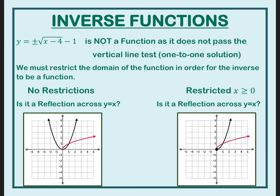It's not a function — it does not pass the vertical line test. So how do we make the inverse a function? If I just did the square root of x, this is a function and it does pass the vertical line test. But this is not a complete reflection over y equals x, and my domain does not match anymore since my domain was all real numbers. So this is not the complete inverse — we're going to have to restrict the domain to only half of the graph.